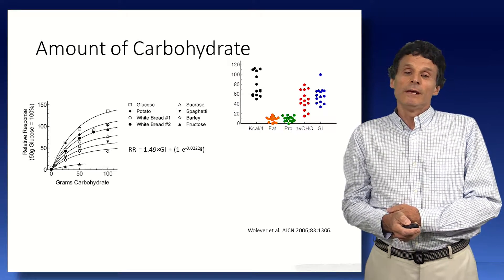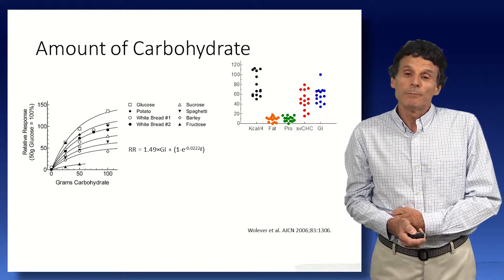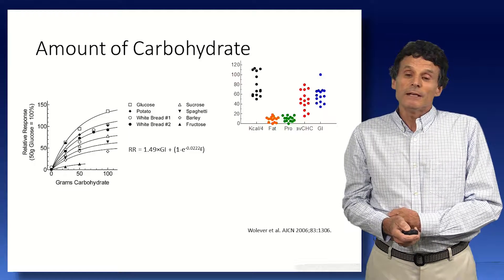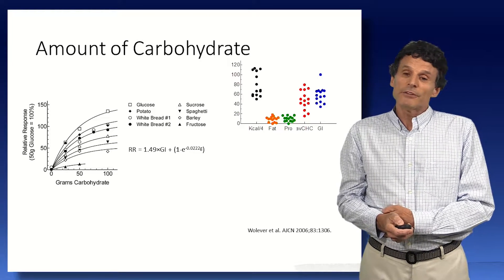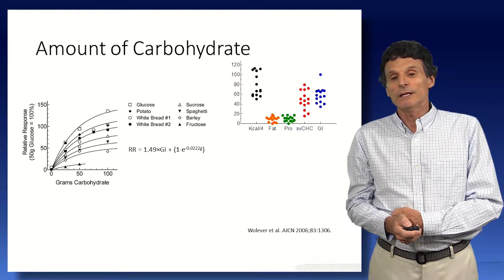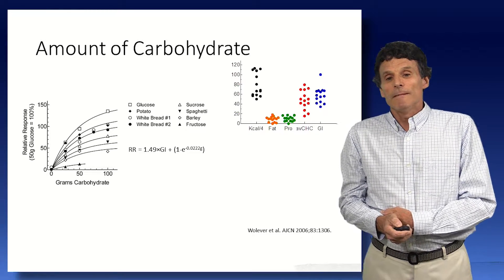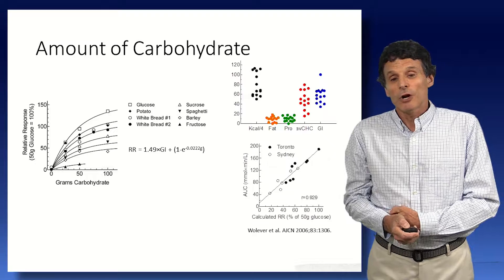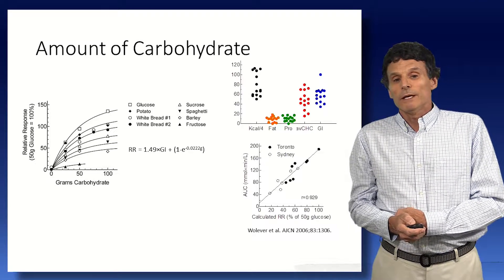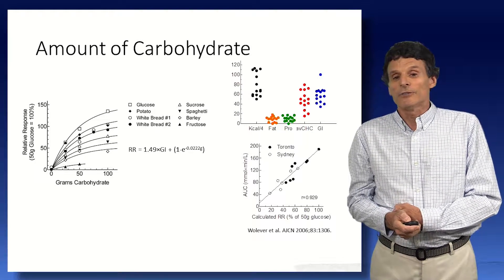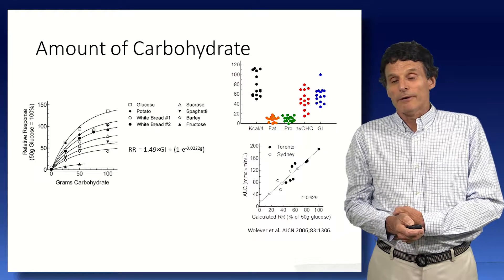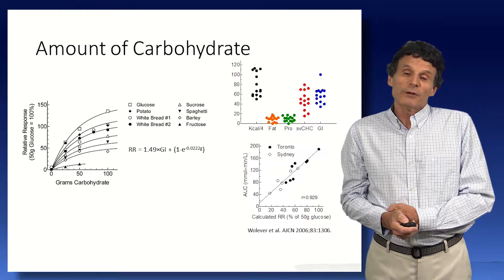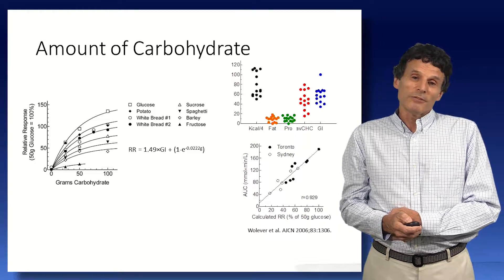We then tested this in collaboration with Jenny Brand-Miller in Sydney with 13 commonly consumed breakfast test meals, which varied in energy, fat, protein, large variation, carbohydrate, and glycemic index. And again, we found almost a perfect correlation between the calculated relative response and the actual mean area under the curve. So this demonstrated that carbohydrate and GI were determinants of the response.